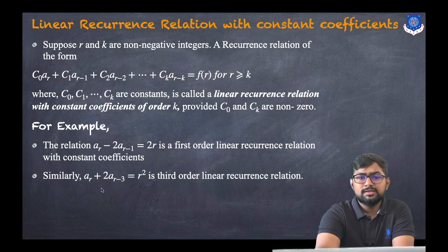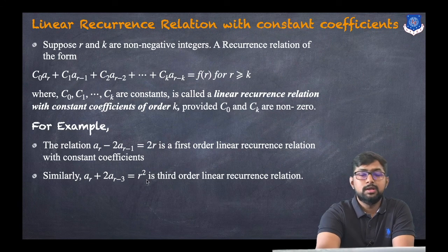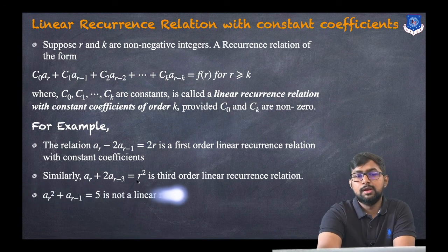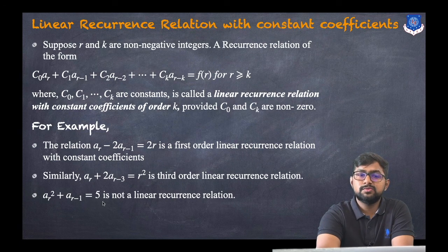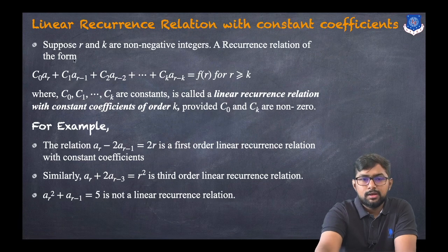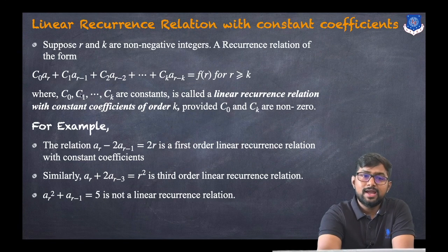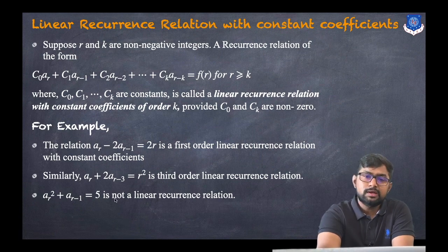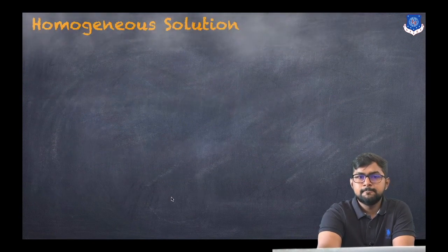Similarly, a_r + 2 * a_{r-3} = r^2 is a third order linear recurrence relation, because we have r - 3, so the order is 3. Now, a_r^2 + a_{r-1} = 5 is not a linear recurrence relation, because in the general form we only have a_r or a_{r-1} — but here we have a_r squared, so it is not linear.